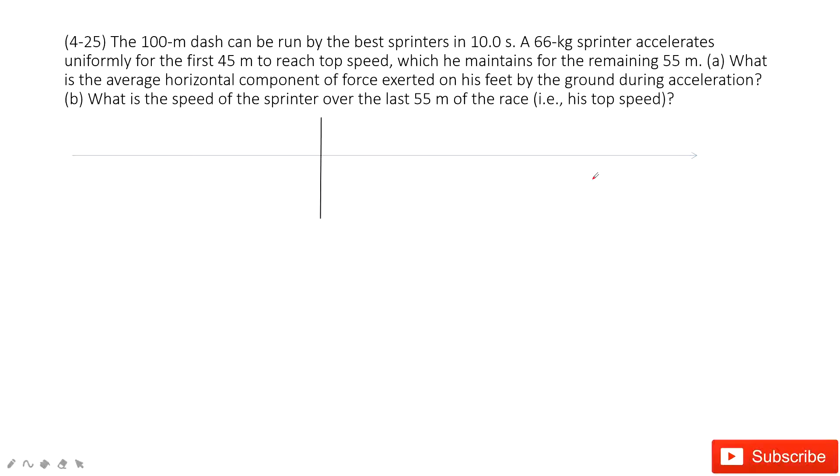This is the sprinter. The total displacement is 100 meters, and the time taken in this motion is just 10 seconds. This is V_0. And then the mass for the sprinter.